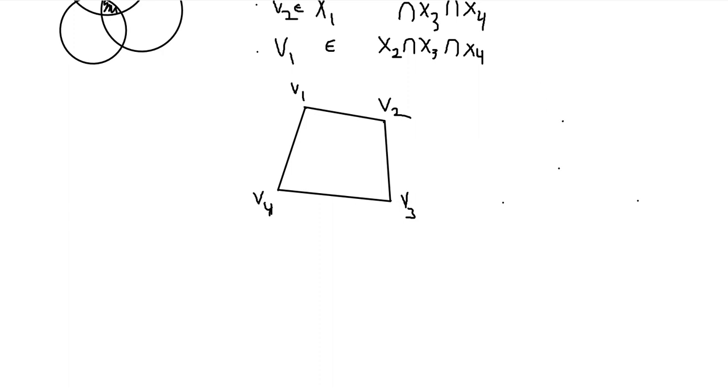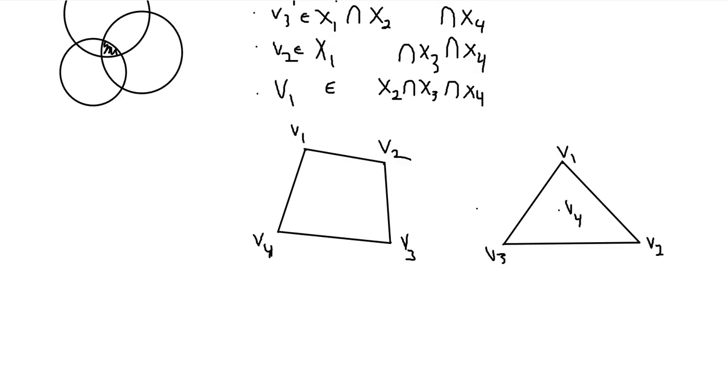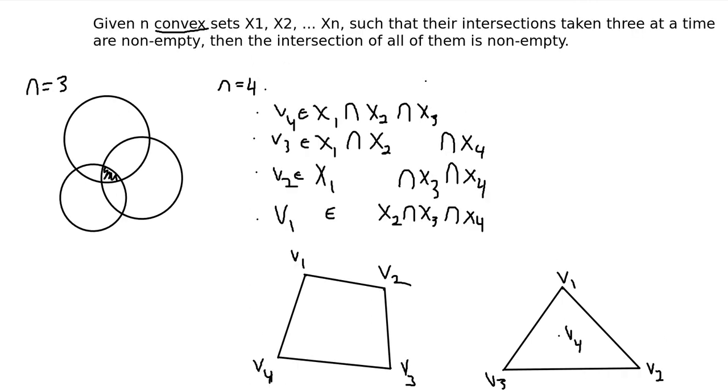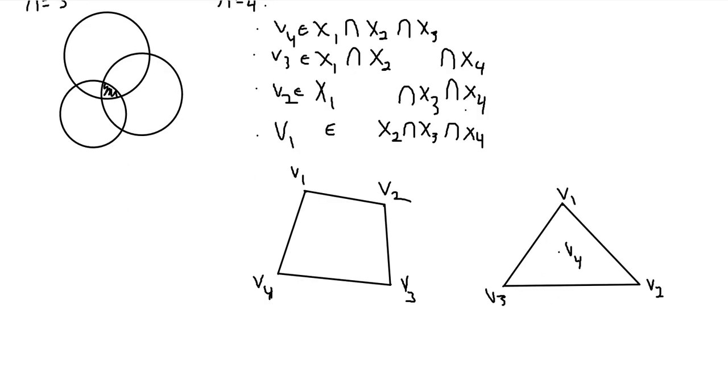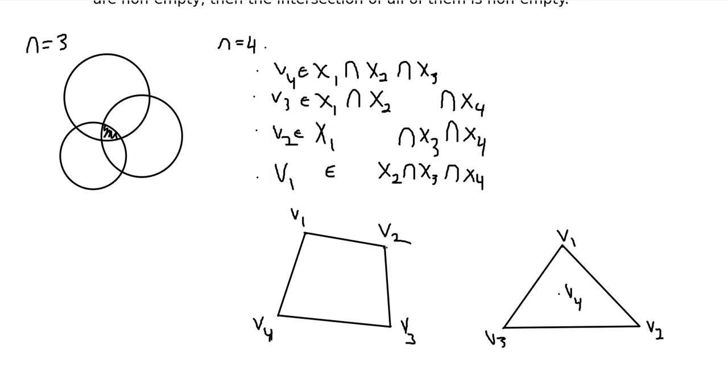Another case is where the convex hull is a triangle, and another point is inside of here, let's say V4. Then, what can we use this to claim? We want to show that there exists a point which is in all four of these sets. So, consider the intersection of V2, V4 and V1, V3. So, this intersection point.